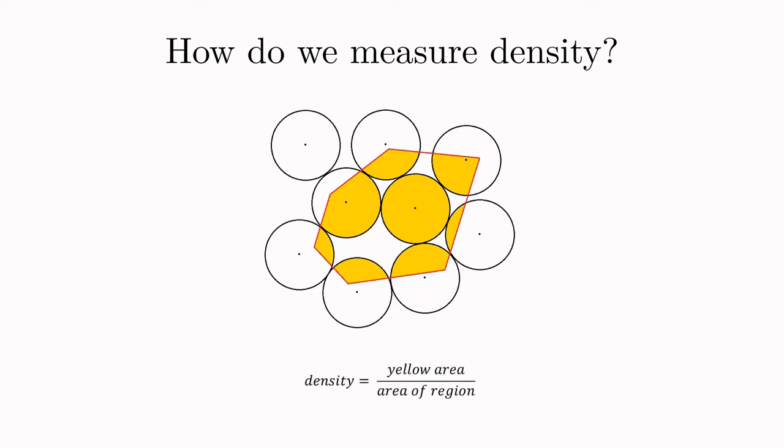Since we're actually dealing with packings of the infinite plane we will define the density as the limit of this quotient as the red region grows to infinity. Now there are clearly some technicalities that I'm sweeping under the rug here. It's not clear whether this limit will always exist or whether its existence or value would depend on the shape of the red boundary region. But going into technical detail about these kinds of questions is unfortunately just outside the scope of this video.